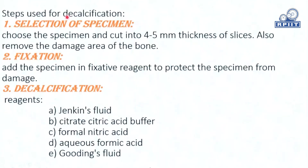Now the steps used for decalcification. First step is the selection of specimen. First, we select the specimen — whichever bone or teeth specimen we need to take. After choosing the specimen, we cut it into slices of 4 to 5 mm thickness.